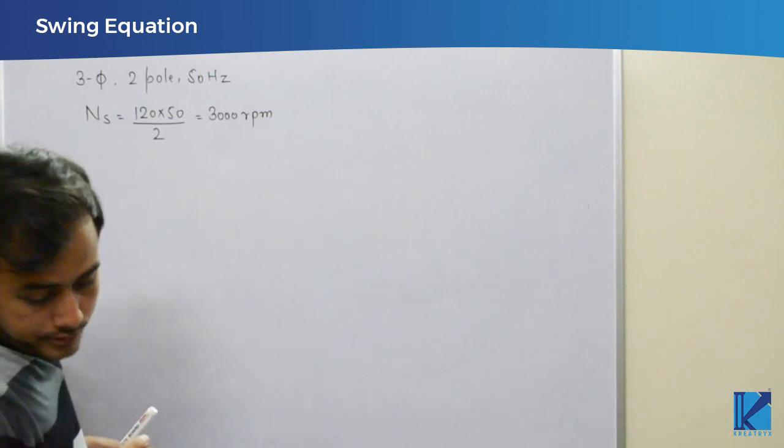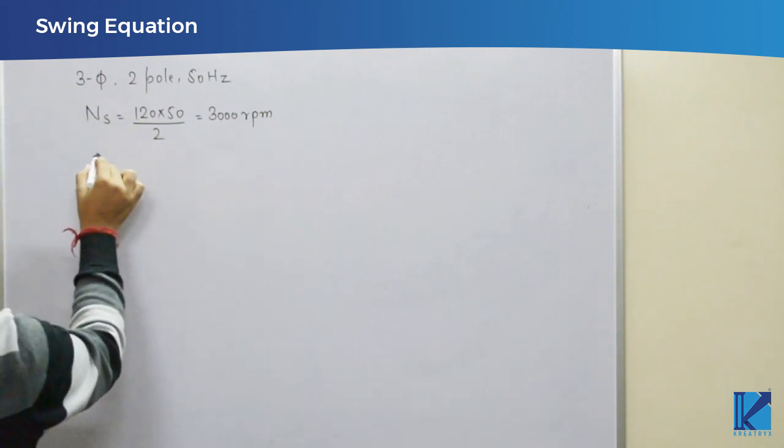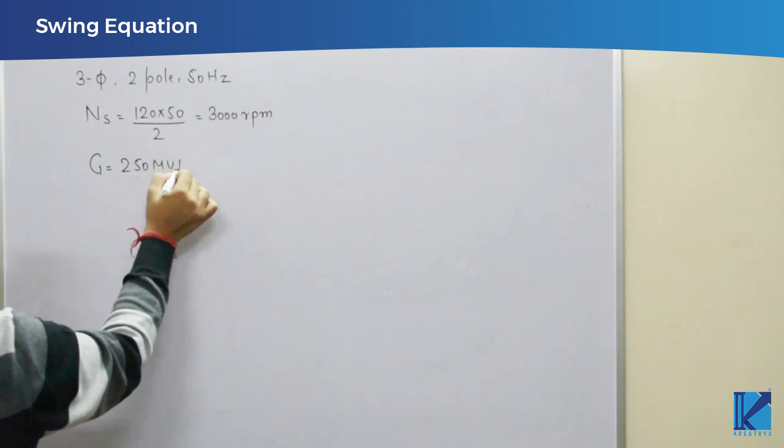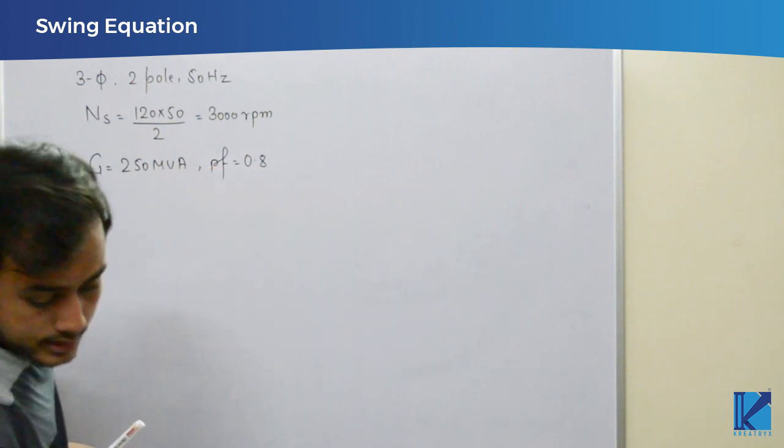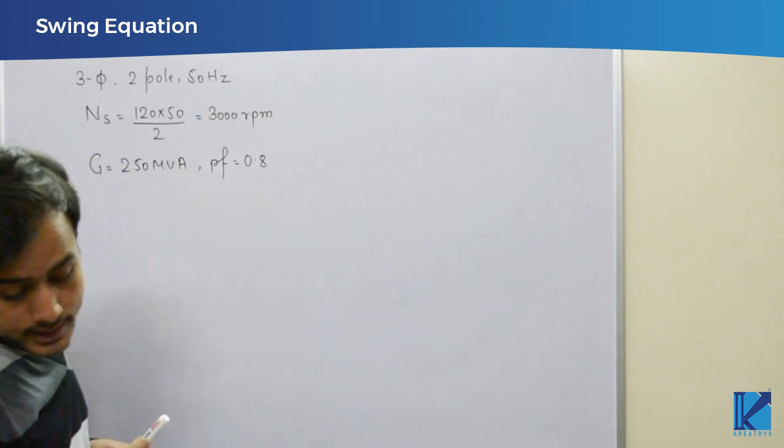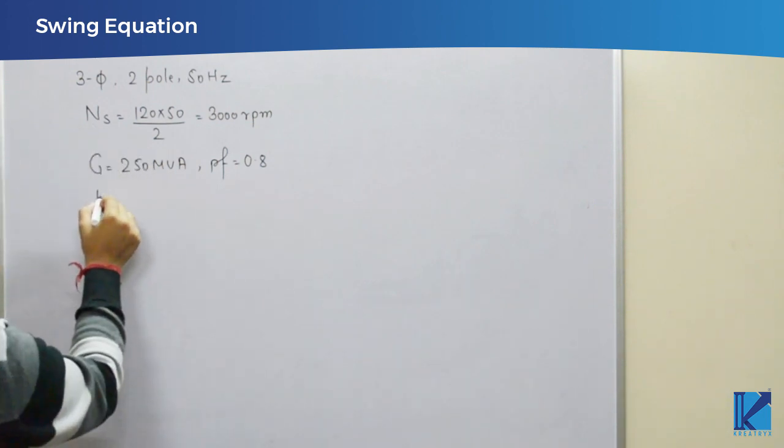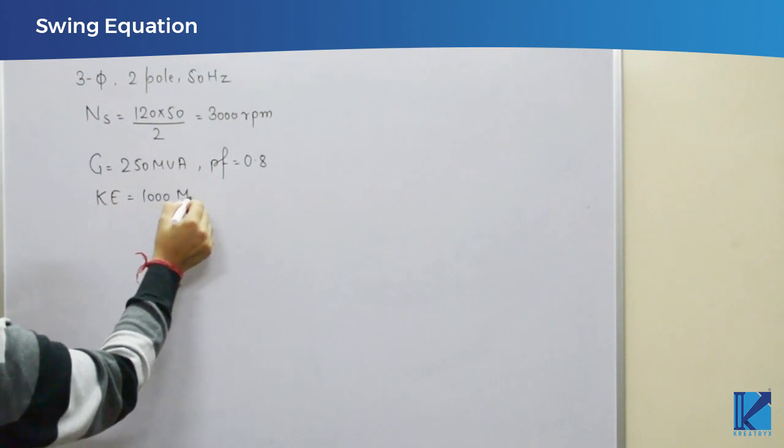Then it says it has a rating of 250 MVA at 0.8 power factor lagging. So, G, that is the rating, is 250 MVA. Power factor is 0.8 lag. Then it says, the kinetic energy of the machine at synchronous speed is 1000 megajoule. So, kinetic energy is 1000 megajoule.